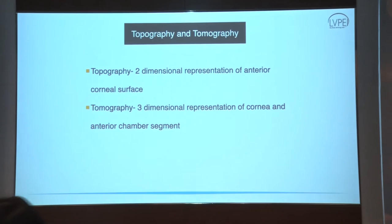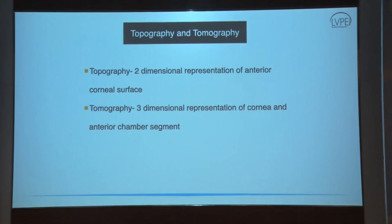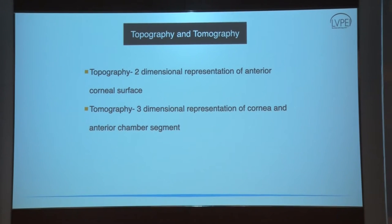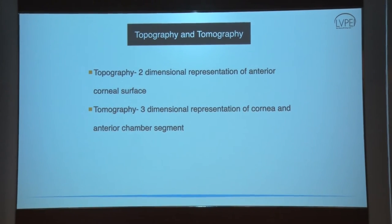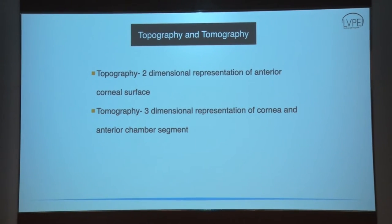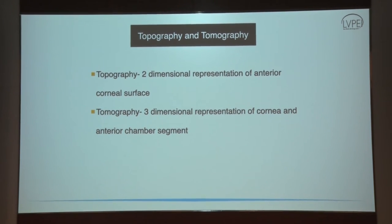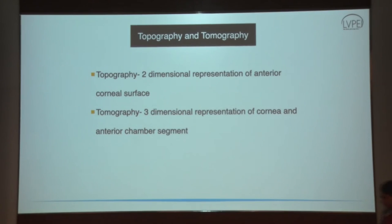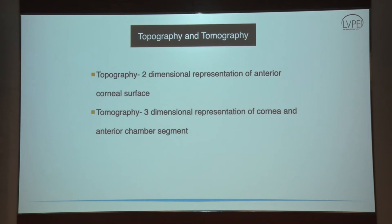First thing to understand is what is the difference between topography and tomography. Topography is a two-dimensional representation of the corneal surface, but tomography takes into account a three-dimensional image. It is going to take into account the posterior surface of the cornea, the thickness of the cornea, and the relation between the anterior and the posterior curvature. That is what tomography is.